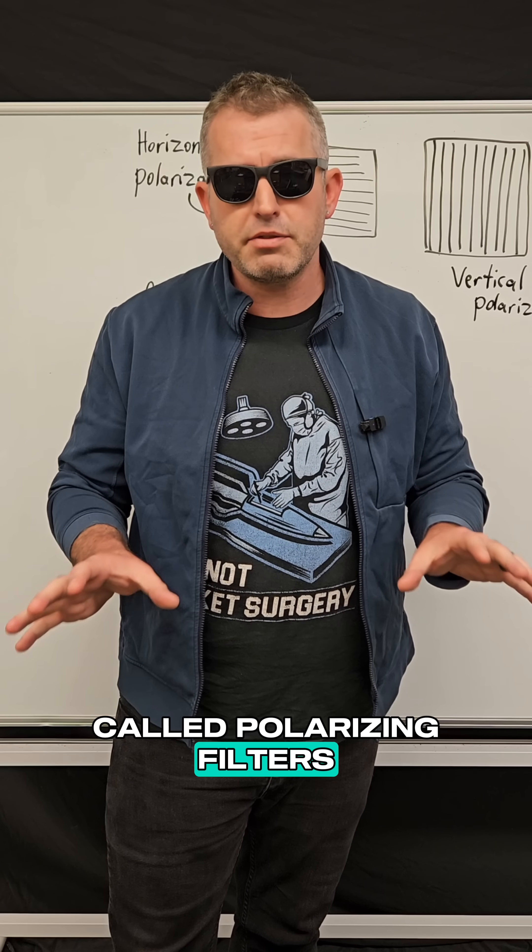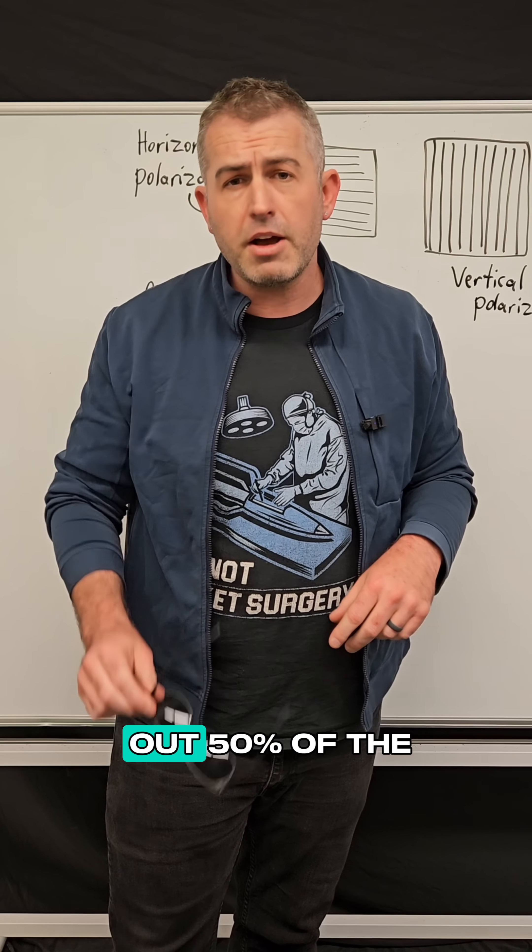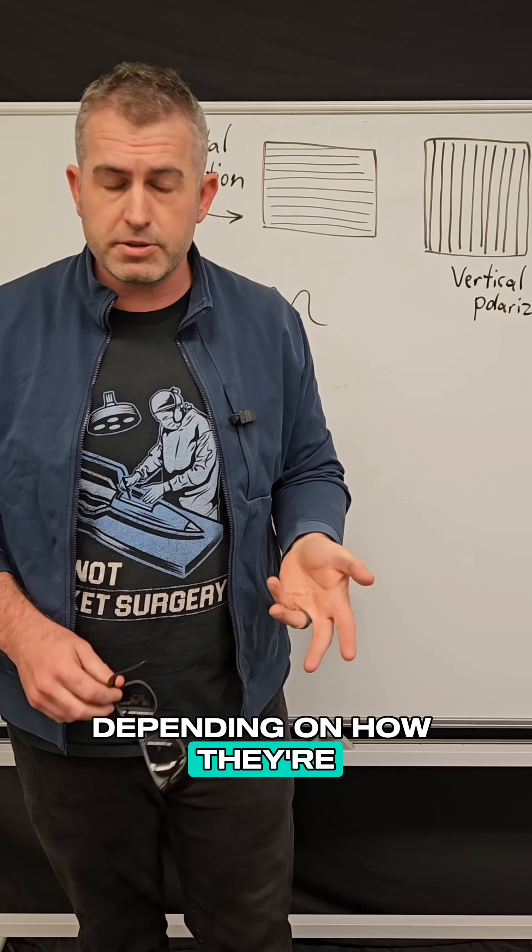Sunglasses contain what are called polarizing filters, and these filters block out 50% of the sunlight or more depending on how they're set up.